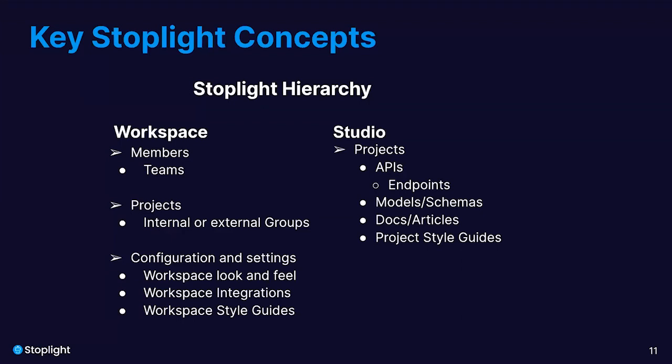Finally, let's look at the hierarchy within Stoplight and the two main user interfaces you will encounter: the workspace and the Studio interface. Your hierarchy begins with your workspace, where you establish the look and feel, settings, integrations with Git repos, and single sign-on options. You will also create and manage members and projects within your workspace interface. In Studio, you create and manage your API projects, style guides, and component library projects. Within any API project, you may have one or many API designs, OpenAPI specifications, endpoints, models and schemas, documentation articles, and applied style guides.